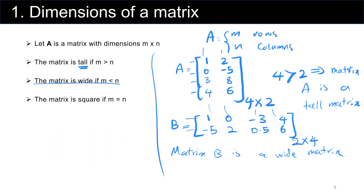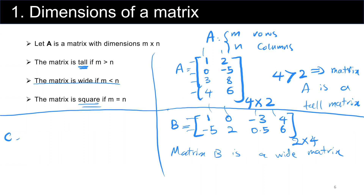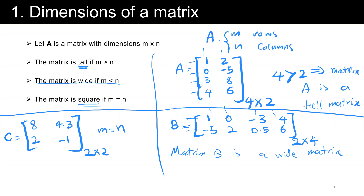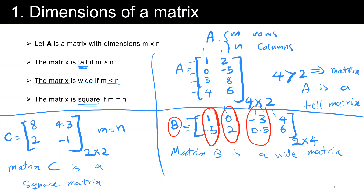Matrix C equals [8, 4.3; 2, -1] is a 2 by 2 matrix, so M equals N — the number of rows equals the number of columns — which means matrix C is a square matrix. Also worth noting, you can represent matrices as a set of vectors: each column of a matrix can be represented as a vector, and each row of a matrix can also be represented as a vector.